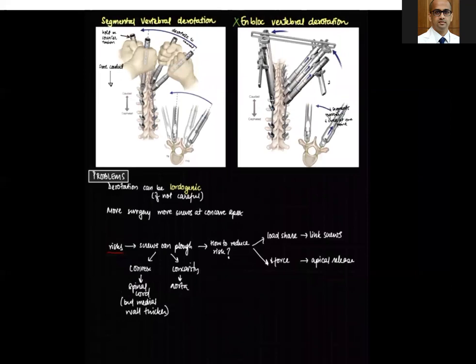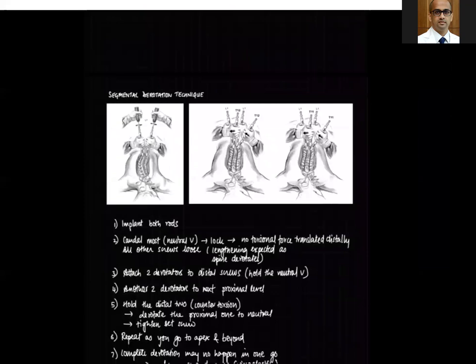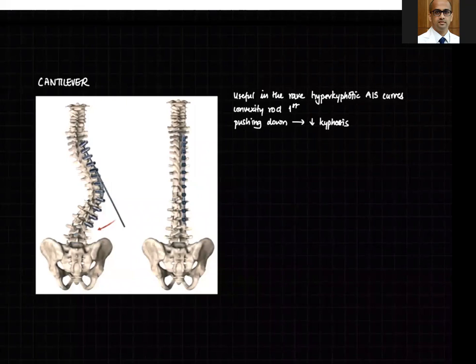One more corrective manoeuvre is the cantilever manoeuvre, used for a hyperkyphotic apex. Rather than placing the concave rod first, you use the convex side rod to press down on the hyperkyphosis to correct it — that is the cantilever manoeuvre. It is rare to have hyperkyphosis in AIS curves, so this is not a commonly used surgical manoeuvre.